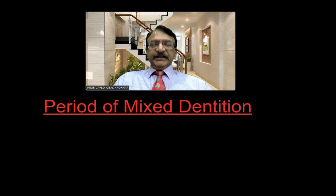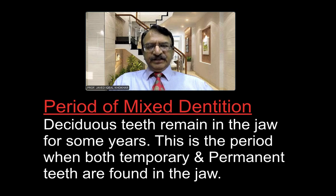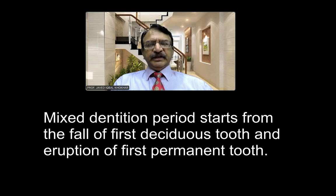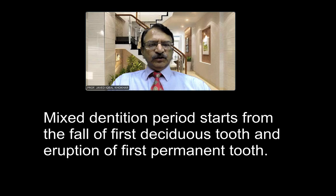There is a period of mixed dentition when both temporary and permanent teeth are present. The deciduous teeth remain in the jaw for some years, and this period when both temporary and permanent teeth are found in the jaw is called the mixed period of dentition. The mixed dentition period starts from the fall of the first deciduous tooth and eruption of the first permanent tooth — meaning the first permanent tooth has appeared while the rest of the milk teeth are still there.